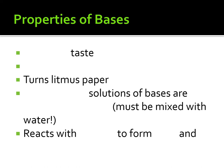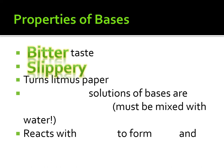Let's continue on with our properties. Bases are bitter, while acids are sour. Bases are also slippery — just think of soap and shampoo and how slippery they are on your hands. The next property is that they turn litmus paper blue. This one is easy to remember: B-B — base turns blue.